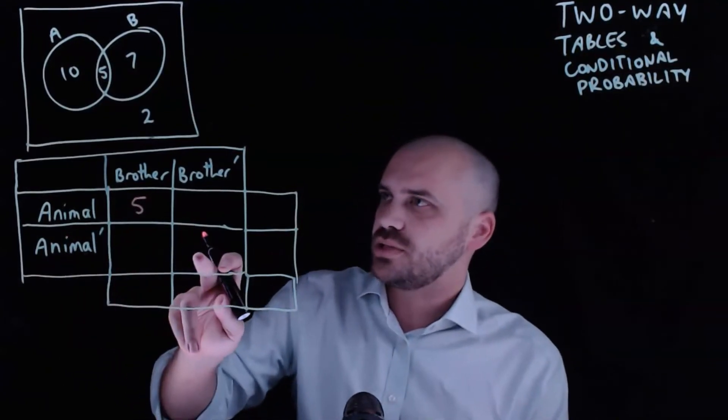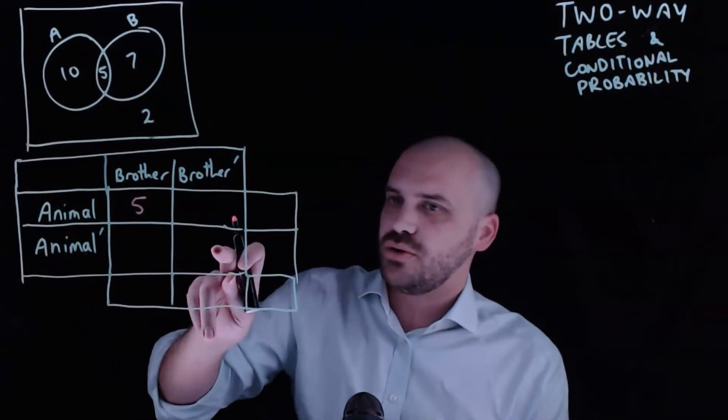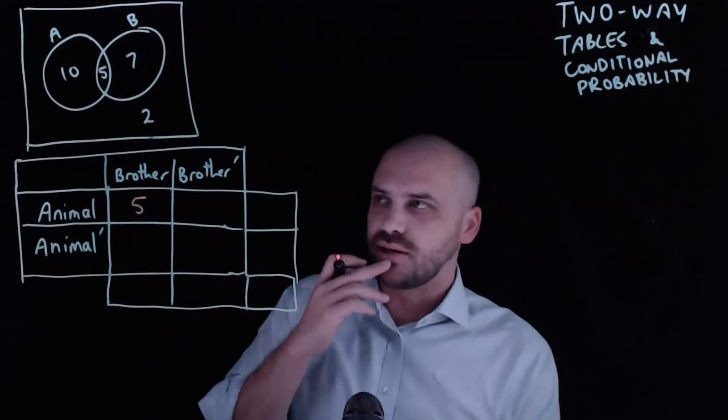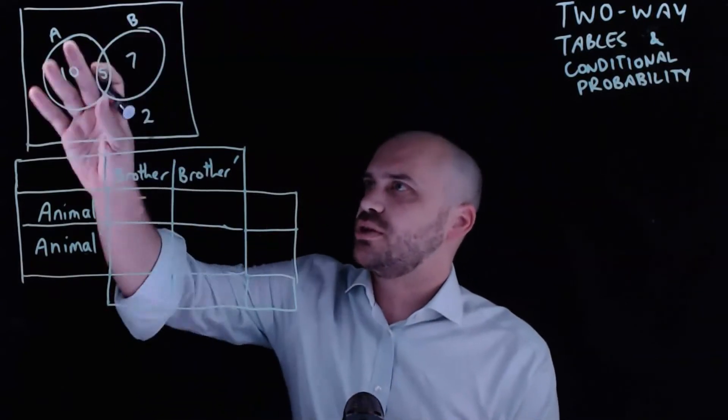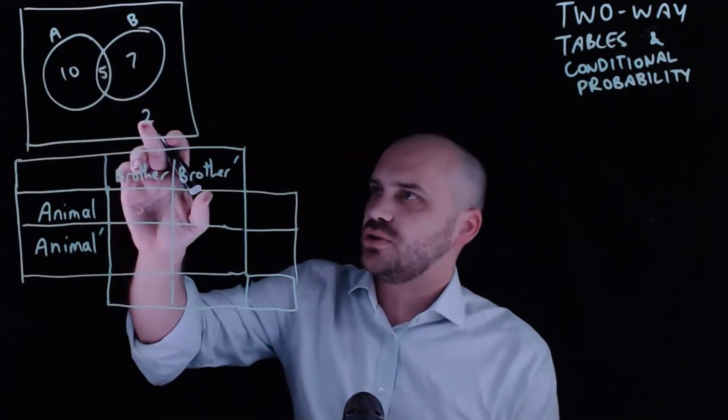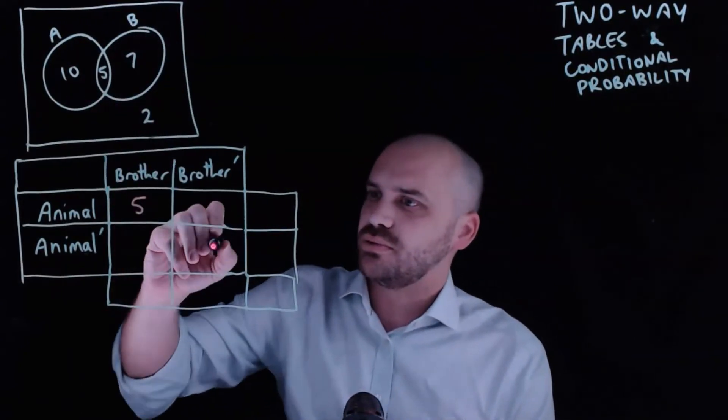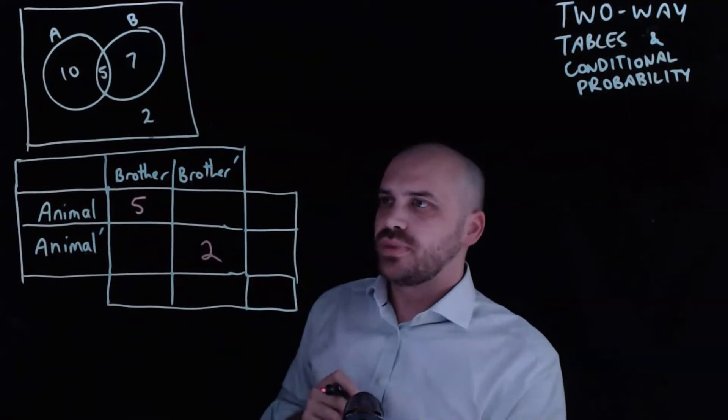No animals in their house and no brothers either. They don't fit anywhere in the circles — that's this number right here, two.